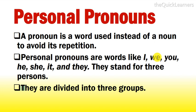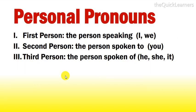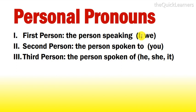I, we, you, he, she, it, and they. They are called personal pronouns because they stand for three persons: the first person, the second person, and the third person. The first person is the person speaking, and the pronouns that stand for the first person are I and we.